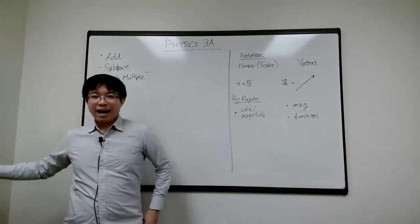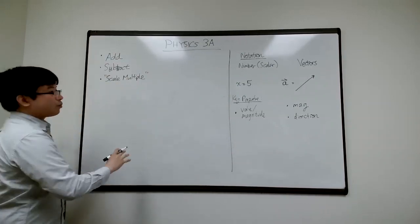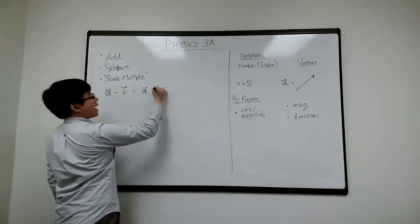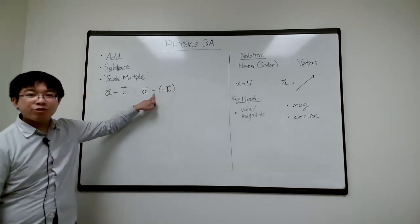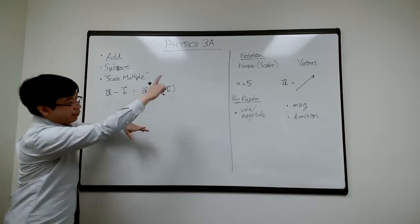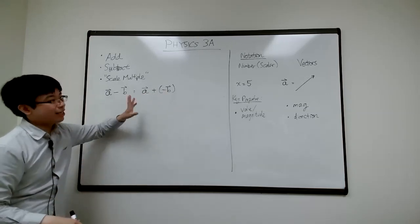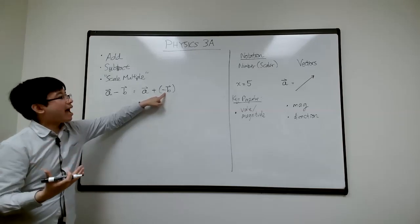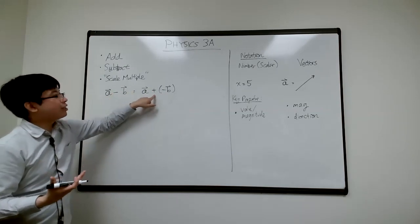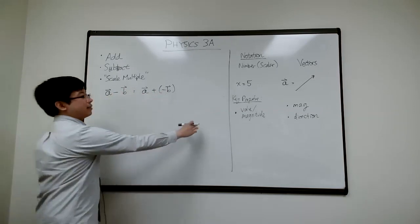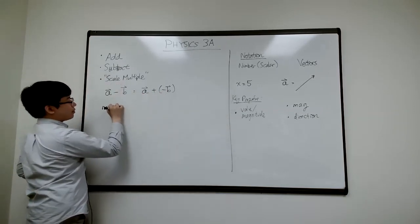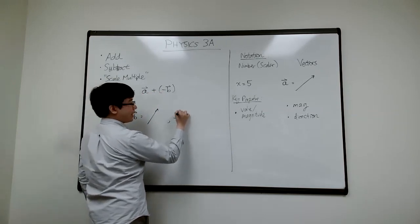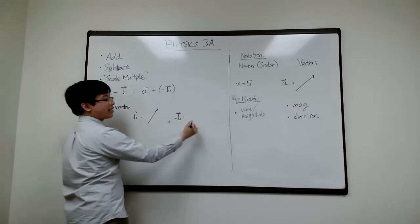How do we subtract arrows? A minus B can be thought of as A plus negative B, because we already know how to do addition using the tip-to-tail rule. It also forms a triangle, which is why it's called the triangle rule of addition. So subtraction is nothing but addition — adding something negative. What is a negative vector? What is a negative arrow?